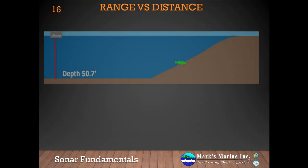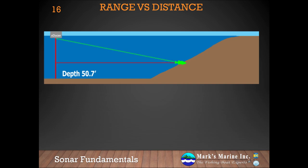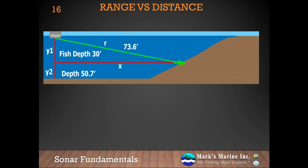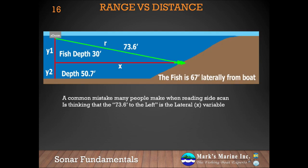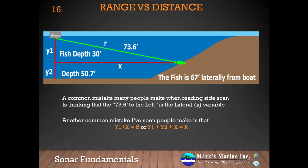Let's look at the previous example from a different view. As you can see, the depth of the water under the transducer is 50.7 feet. The fish is at 30 feet, and the range to the target is 73.6 feet. So how far do you think the fish is from the boat? The fish is 67 feet laterally from the boat. A common mistake is thinking the 73.6 feet is the lateral distance, x. Remember, sonar measures range and has no way of knowing how deep the target is. Another common mistake is thinking the range, 73.6 feet, is the fish depth, 30 feet, plus x — which would be 97 feet — or that y1 + y2 + x = r. Both would be true only if either the y variable or the x variable is zero, which is the same as passing directly over the target.